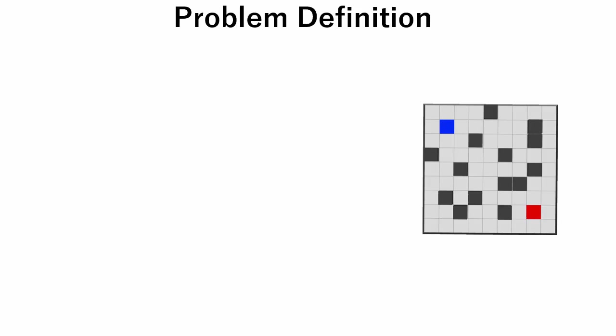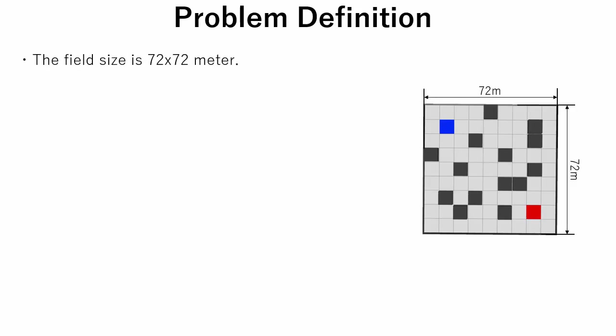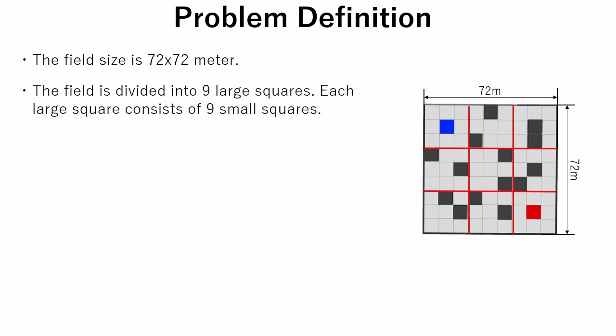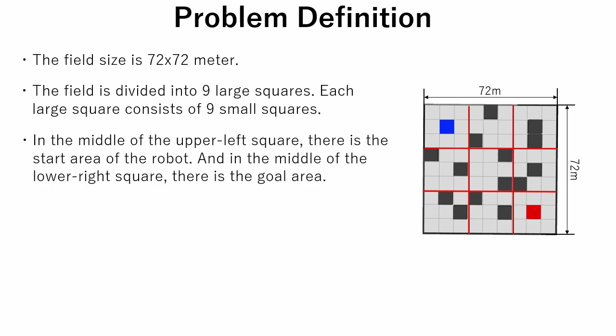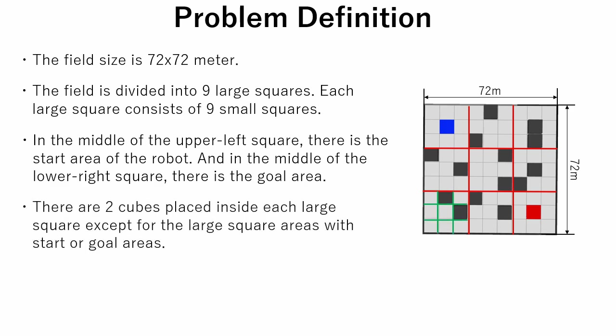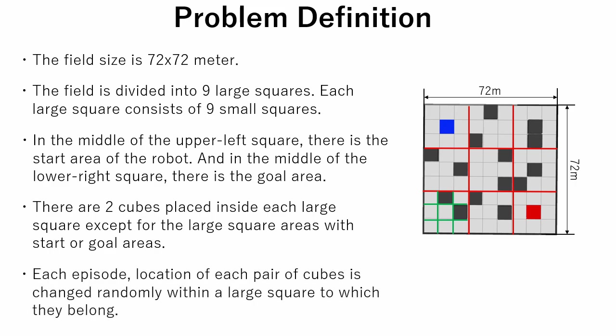Now let's define our problem. We have a field of size 72 by 72 meters on which the robot will move. The field is divided into nine large squares, and each large square consists of nine small squares. In the middle of the upper left square, there is the start area of the robot, and in the middle of the lower right square, there is the goal area. There are two black cubes placed inside each large square, except for the large square areas with start or goal areas. Each episode, the location of each pair of cubes is changed randomly within the large square to which they belong.